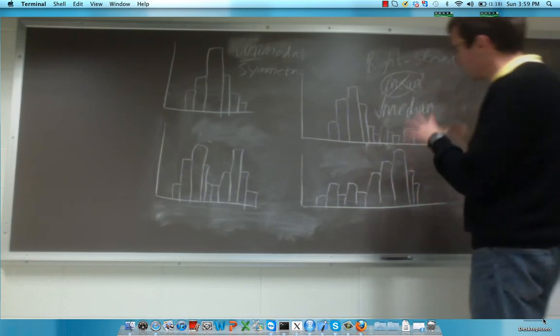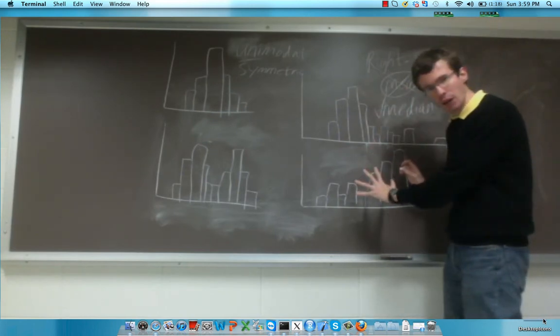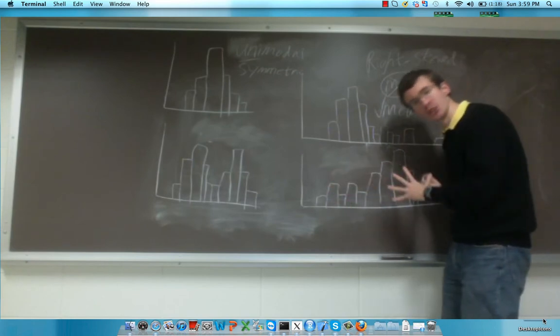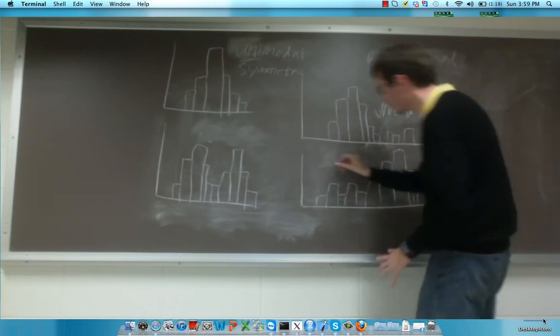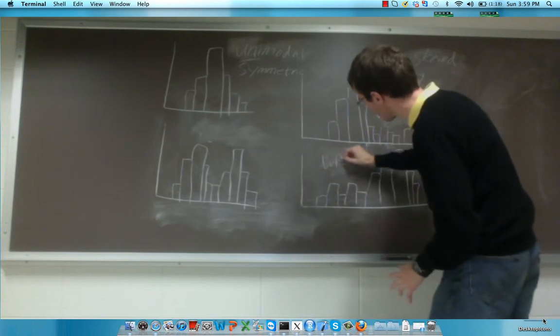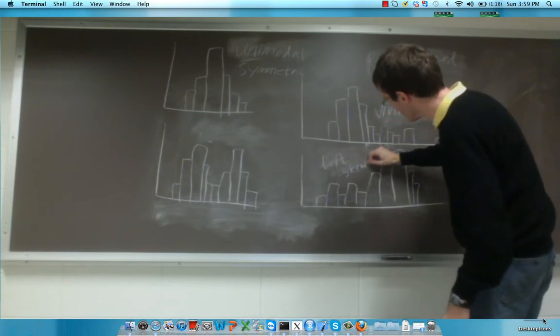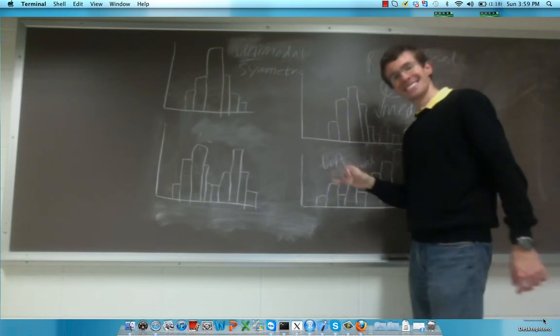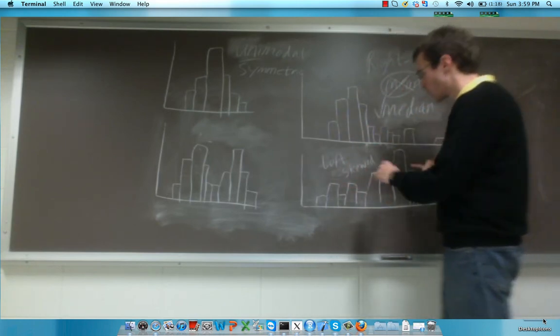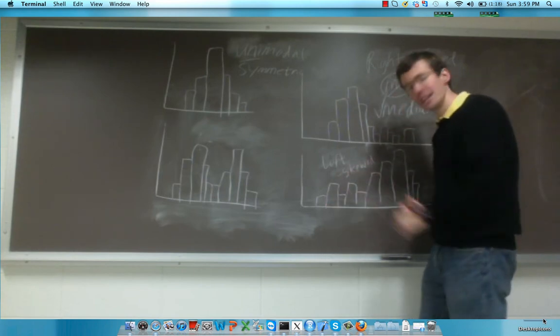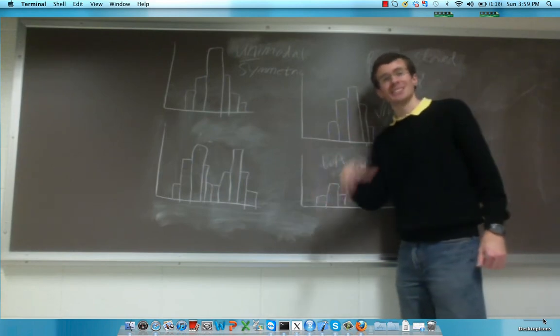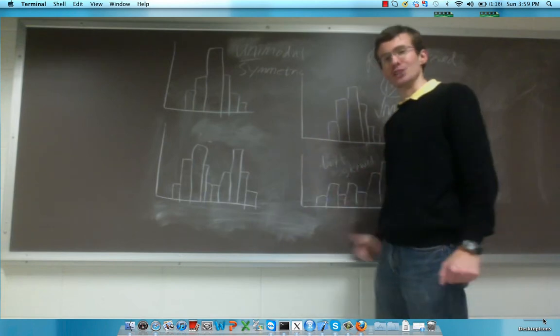And lastly, we can see that this can also apply to the converse, where the distribution can be skewed to the left, where you have a tail extending leftwards. The concept is the same in this case, where the mean is going to be more influenced by the presence of a skew, but the median will be relatively uninfluenced and thus will be a better measure of central tendency. Thank you.